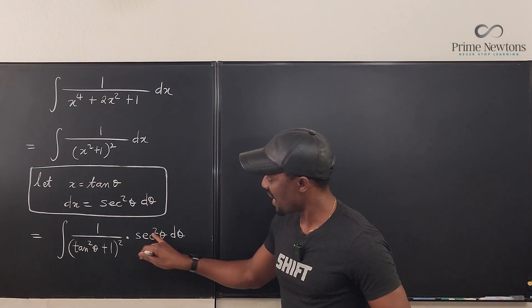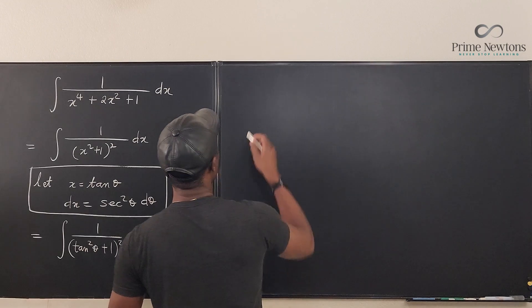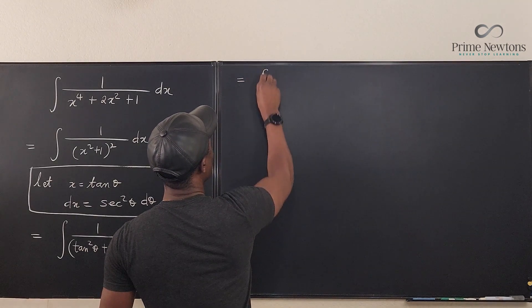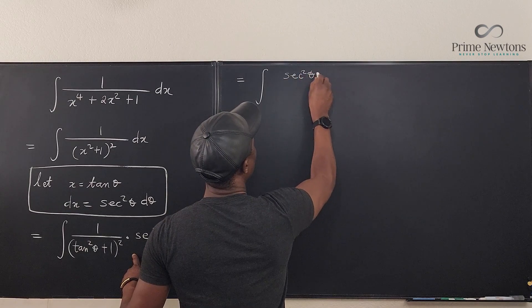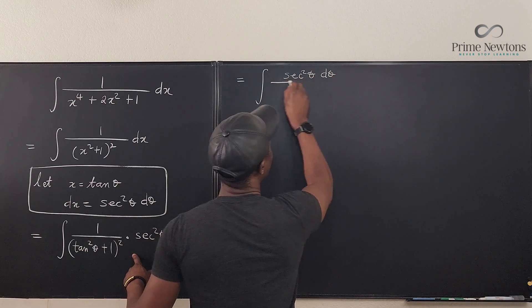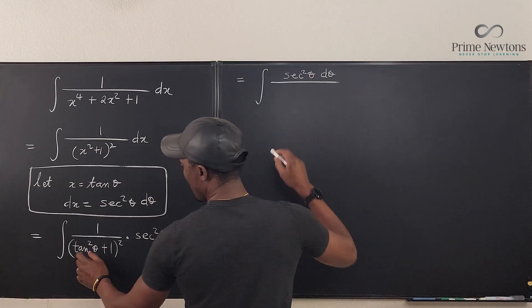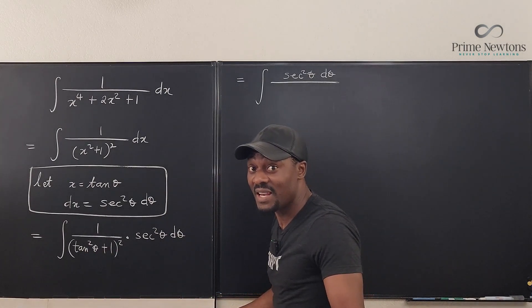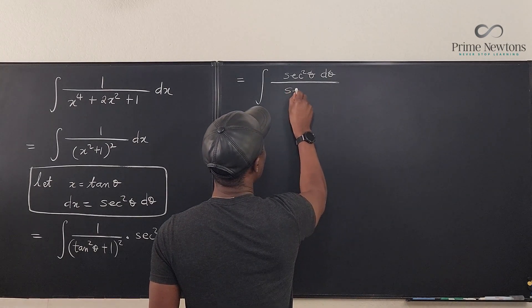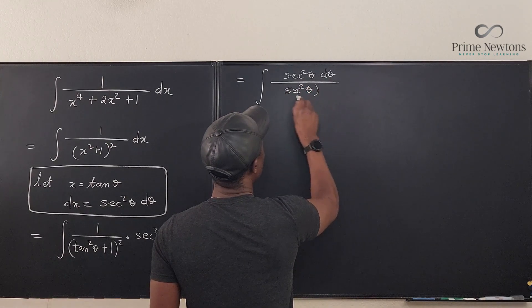Let's clean this up. So now we can easily simplify this expression because I know that this is going to be equal to the integral of sec^2 θ dθ divided by... Now what is tan^2 θ + 1? It's sec^2 θ. We know that. It's going to be (sec^2 θ)^2.